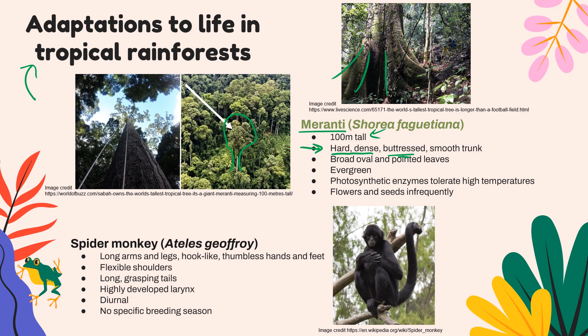The Maranti tree also has a smooth trunk so water flows right off rather than being captured and adding weight. Its leaves are broad for capturing lots of sunlight, but also oval and pointed so water flows off easily — again, to avoid added weight. It's an evergreen, carrying out photosynthesis all year long. Its photosynthetic enzyme rubisco can tolerate high temperatures, since the rainforest gets quite warm. Flowers and seeds are produced very infrequently — perhaps only one year out of five — because there's no shortage of animals to eat the seeds and it doesn't want to waste energy producing them.